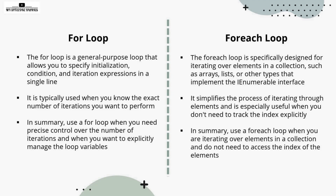To summarize both: use a for loop when you need precise control over the number of iterations and when you want to explicitly manage the loop variables. Use a foreach loop when you are iterating over elements in a collection and do not need to access the index of the element — if there is no need to access the index, then go for a foreach loop.